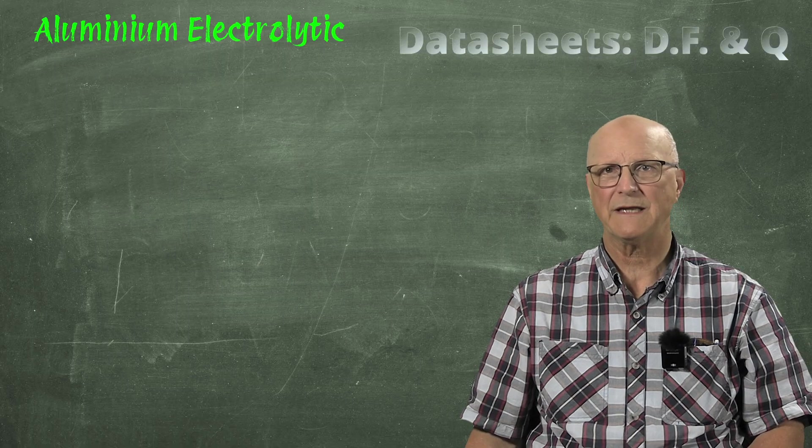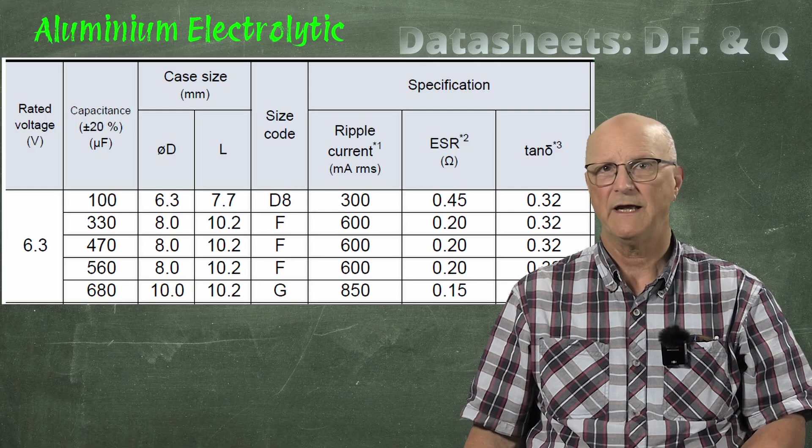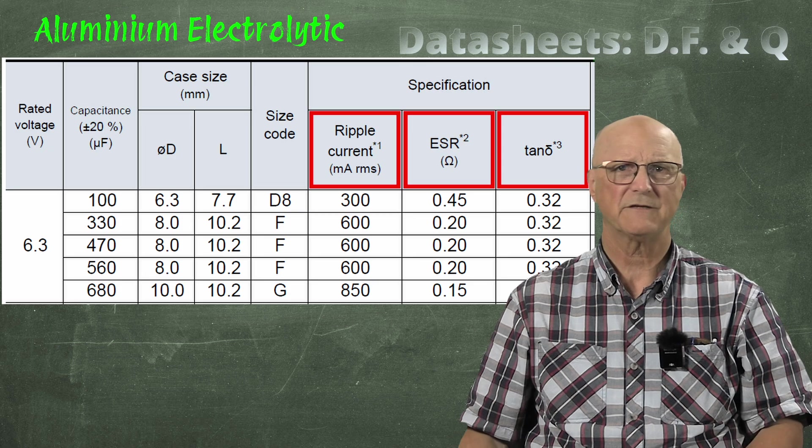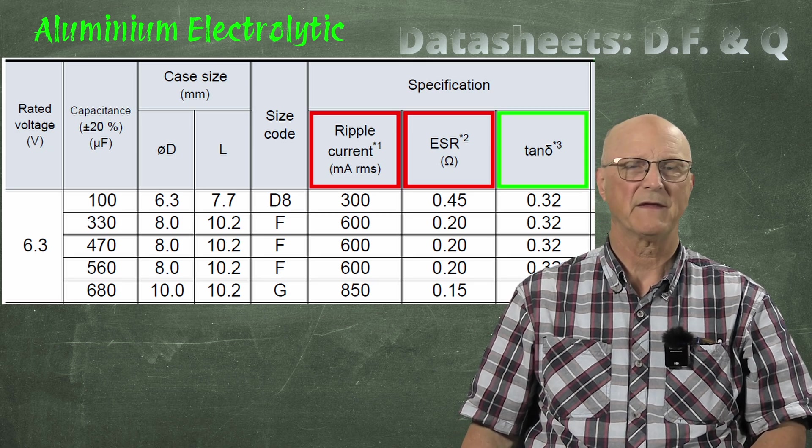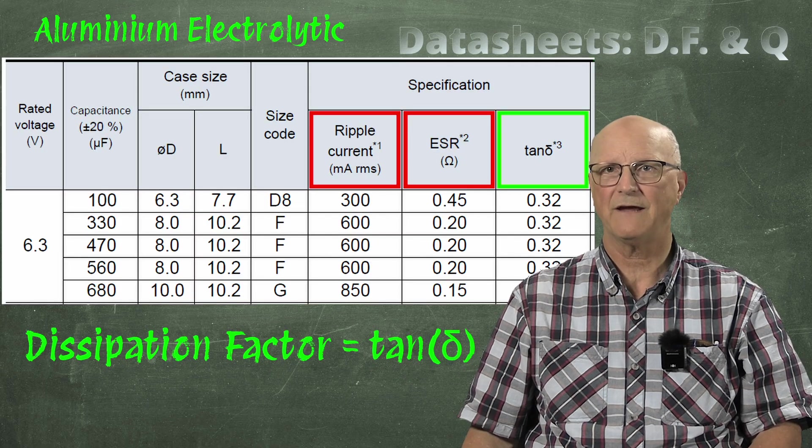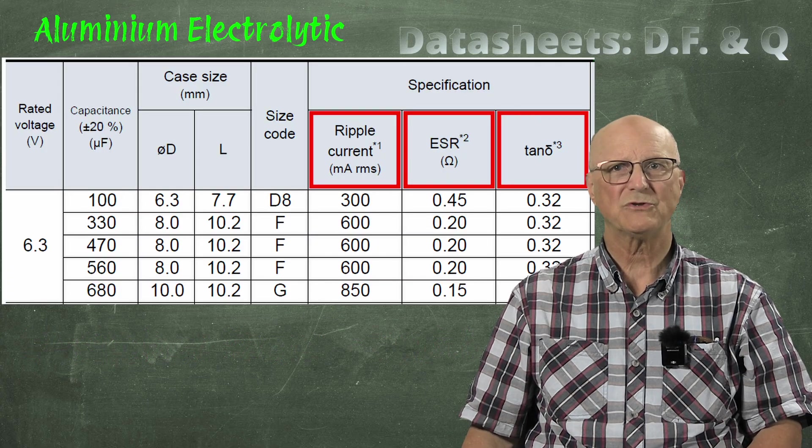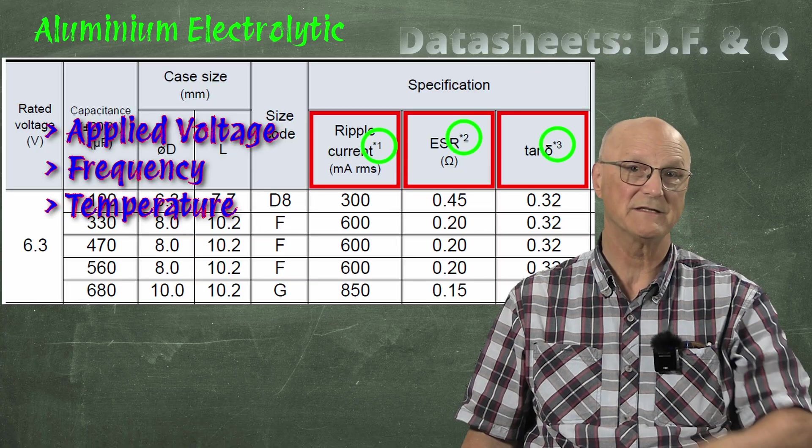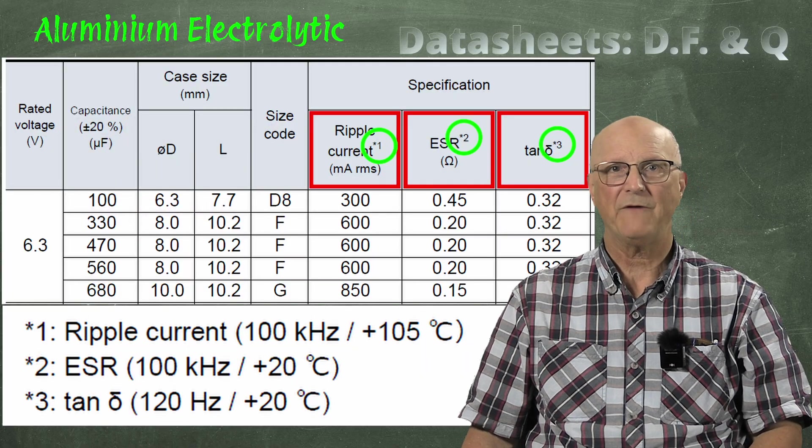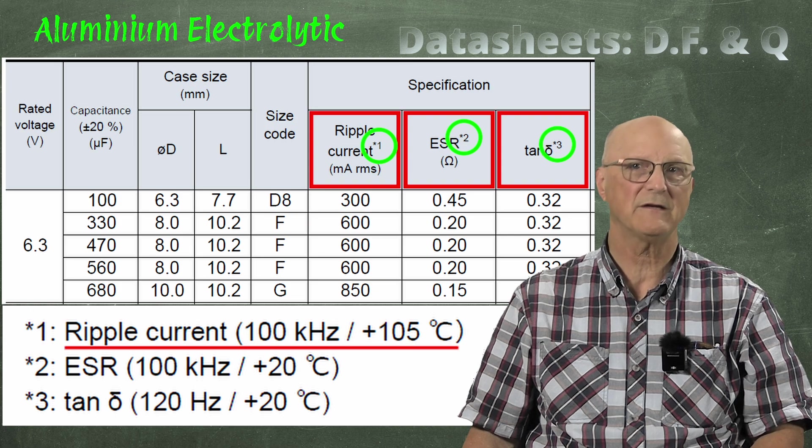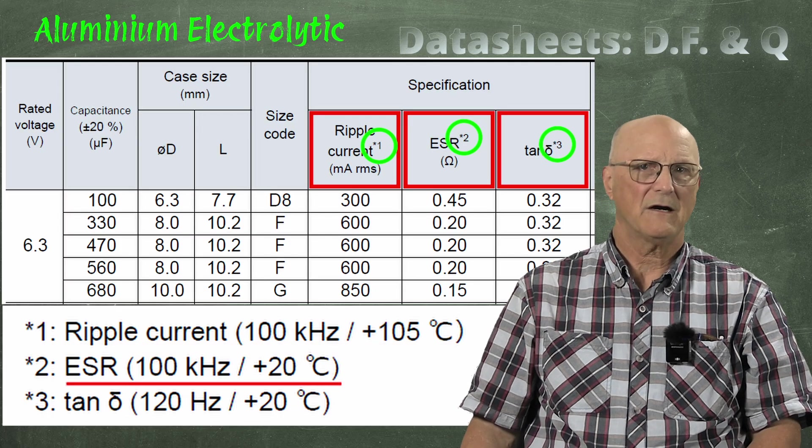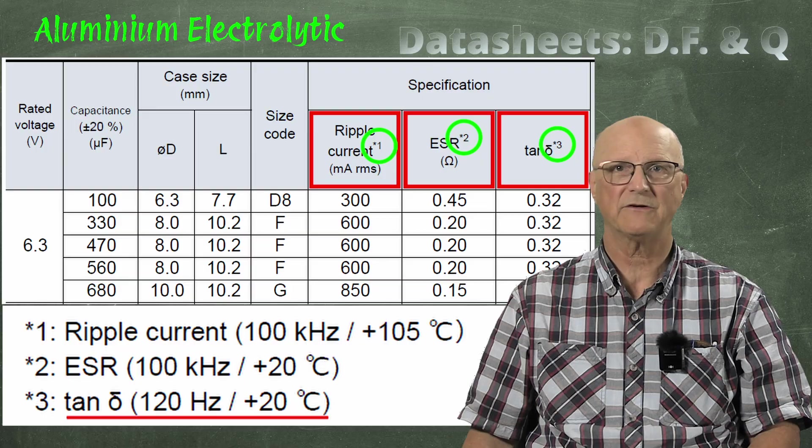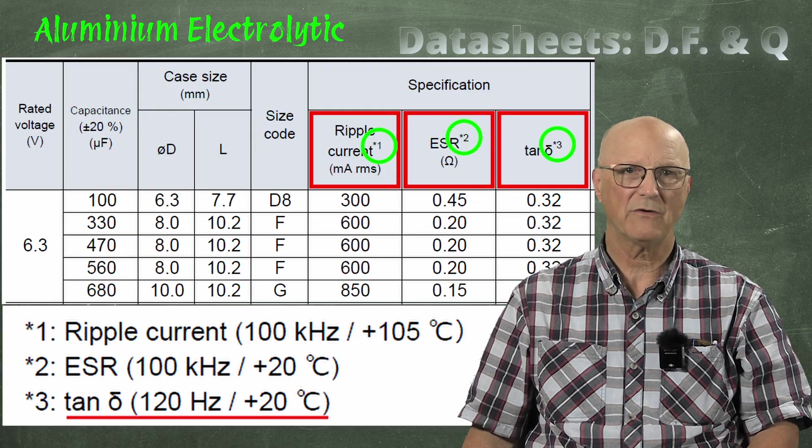Now, let's look at a datasheet for an aluminum electrolytic capacitor. Take a look here at this specification table and notice that there are three columns labeled ripple current, ESR, and tan delta. Now, we recognize the first two, but what about this tan delta business? This is a dissipation factor, which is the tangent of the angle delta. Remember that these will change with applied voltage, frequency, and temperature, so we have to pay attention to the little numbers next to each of these. These numbers point us down to the bottom of the table where we find that the ripple current was measured at a frequency of 100 kilohertz and 105 degrees Celsius. The ESR was measured at 100 kilohertz and 20 degrees Celsius, and tan delta, or the dissipation factor, was measured at 120 hertz and 20 degrees Celsius.